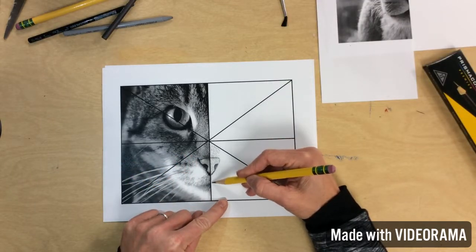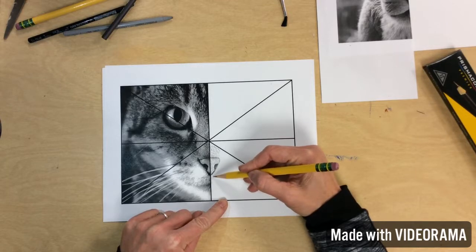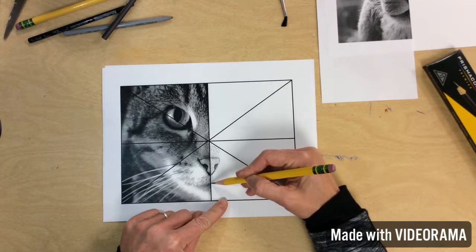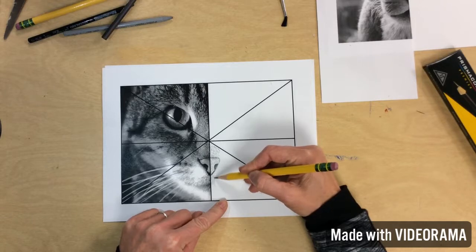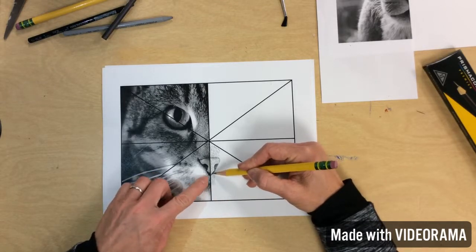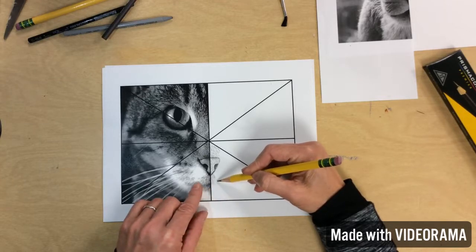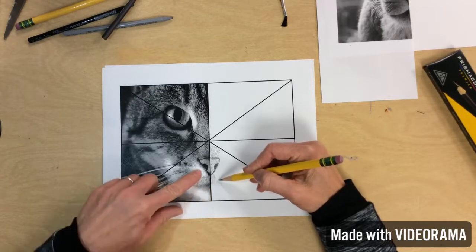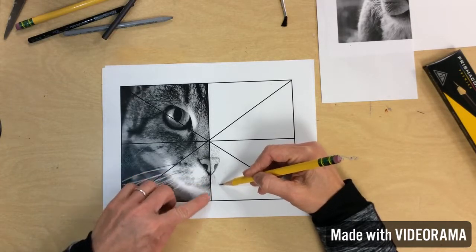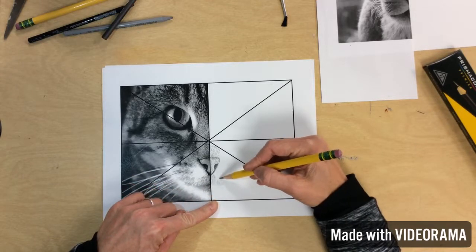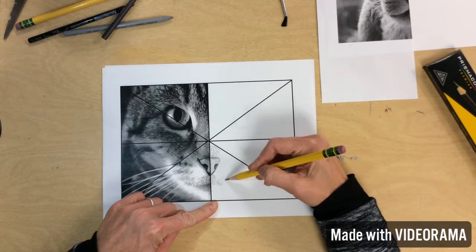The lines on the animal's fur is kind of going in this direction. Then I'm going to have, you can have long, you can have short lines, you can have longer lines. Look at the picture, look at the image. See how it's coming, fanning out. And then as it comes out towards this direction, you don't see as much. The fur is actually there, but it's white. So you cannot draw white.